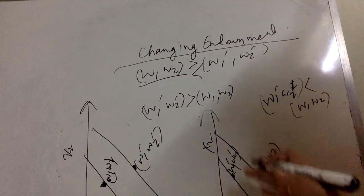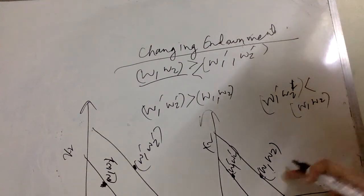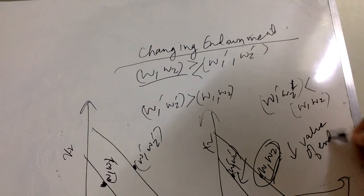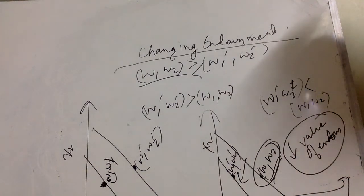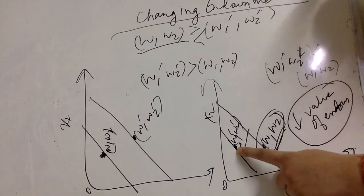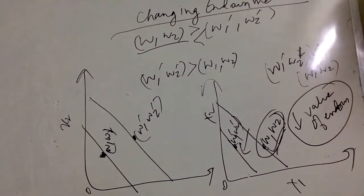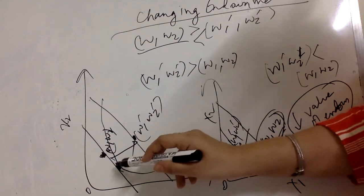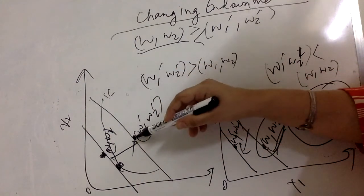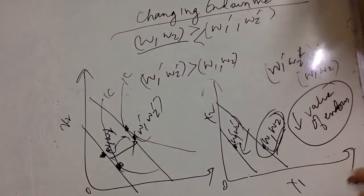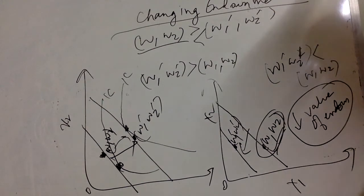If the value of endowment decreases, the set of opportunities declines — the budget set contracts. If the endowment increases, the value of opportunities also rises. A consumer who was consuming at a given point can now afford more; if the IC was tangent at one point and endowment rises, the consumer can move to a higher consumption bundle, making them better off in terms of utility and income.